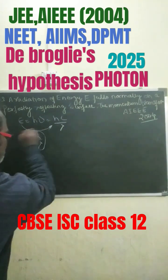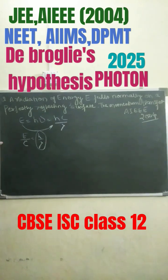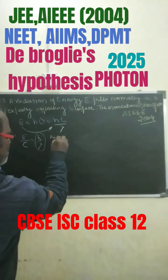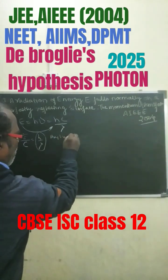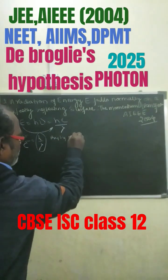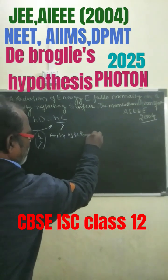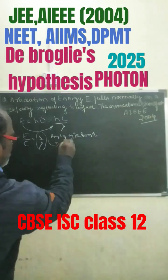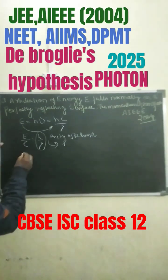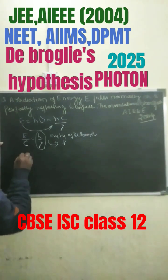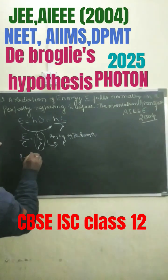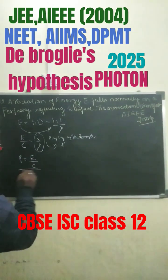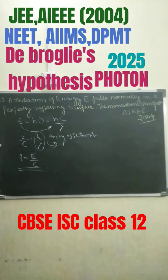By the hypothesis of De Broglie, this is said to be momentum. So finally, we can write down momentum equals to E by C. So this is the initial one.